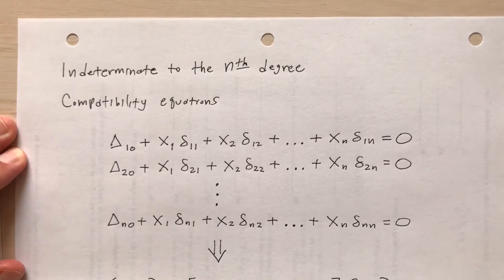Okay, indeterminacy to the nth degree. What if we have more than just one redundant? Well, if we have more than just one redundant, we have to set up a system of equations, a system of simultaneous equations.